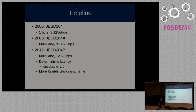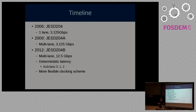Quick timeline: JESD204 went through three revisions. The first one in 2006 had only one lane running at 3.125 gigabits per second, and people quickly figured out this was not enough. So in 2008 there was the first revision, JESD204A, which added support for multiple lanes. Then there was a second or third revision, JESD204B, which raised the per-lane limit up to 12.5 gigabits per second.